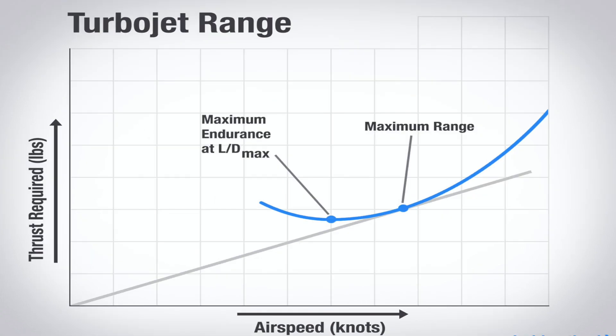Finding the greatest proportion between velocity and engine output is actually very simple on a graph. Draw a straight line from the origin of the graph tangent to the engine output curve. With a thrust required curve, that tangent point occurs a little faster than the lowest thrust required point.